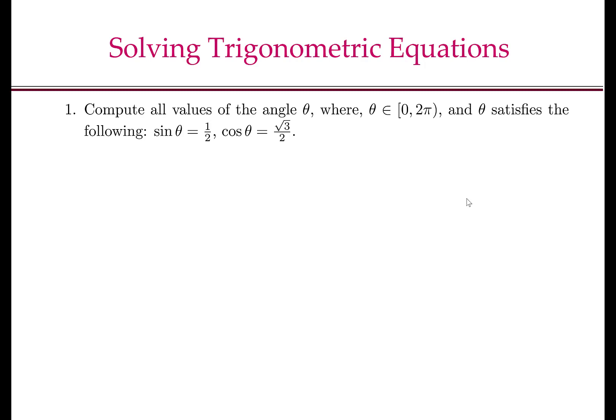Let us first look at a couple of examples. Suppose we are given sin theta equal to half and cos theta equal to square root of 3 by 2. We have to compute all values of the angle theta where theta is between 0 and 2 pi.